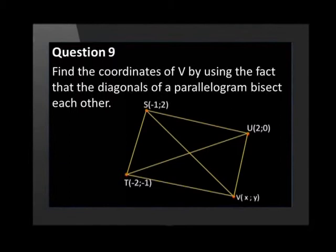SUVT is a parallelogram with vertices S with coordinates (-1, 2), T with coordinates (-2, -1), U with coordinates (2, 0), and V with coordinates (x, y). Find the coordinates of V by using the fact that the diagonals of a parallelogram bisect each other.